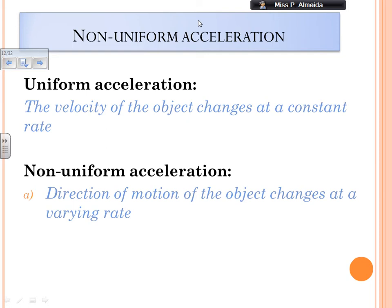Non-uniform acceleration can happen when the direction of motion of the object changes at a varying rate. I could have always the same speed, but going around in a circle, and if that is happening, then I'm changing the direction at a varying rate. And then my circle could get bigger and smaller, a bigger curve or smaller one. So this is non-uniform acceleration.